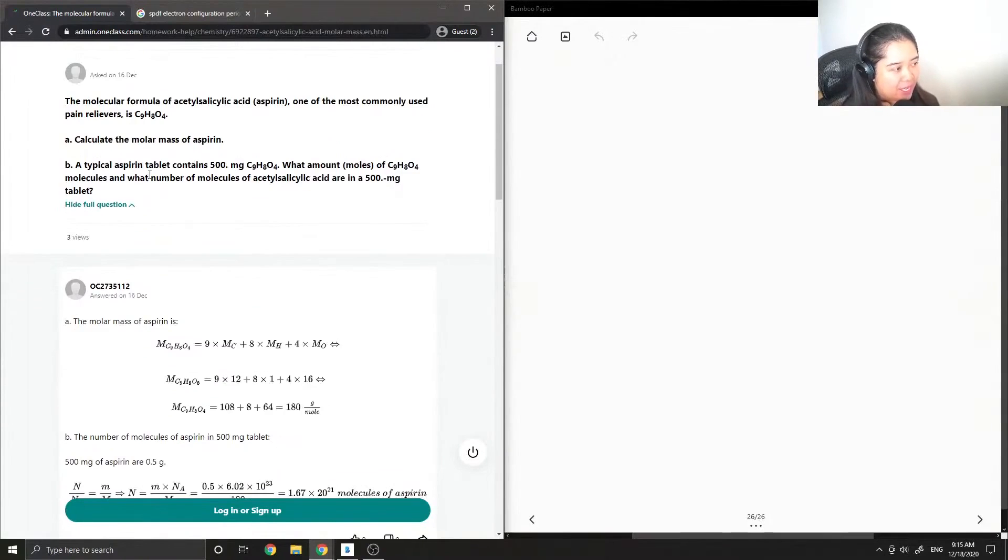a typical aspirin tablet contains 500 milligrams of C9H8O4. What amounts or moles of C9H8O4 molecules are there? And what number of molecules are in a 500 milligram tablet?